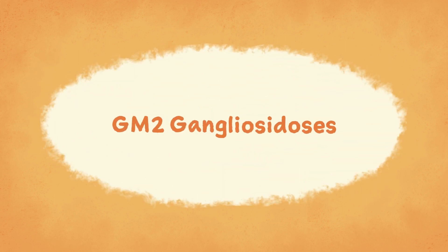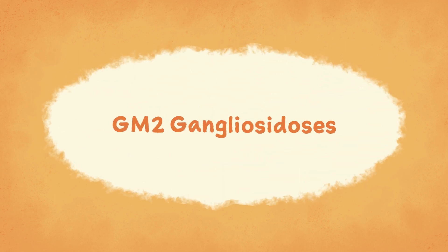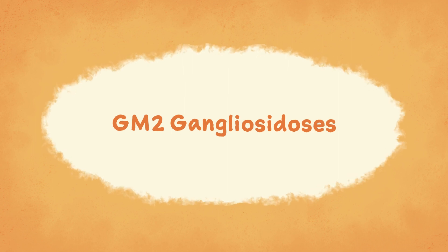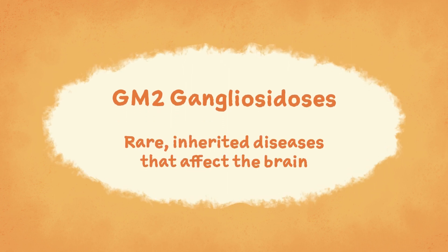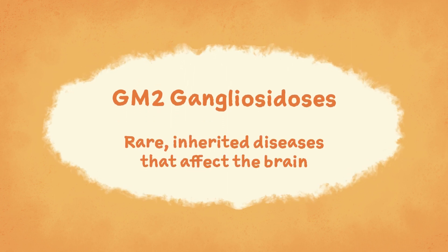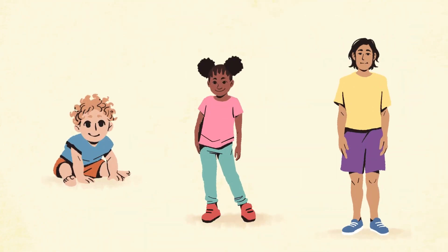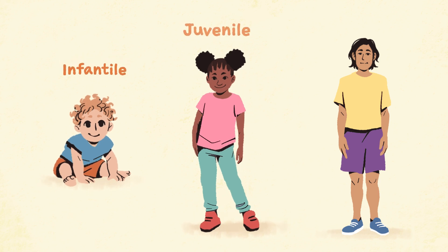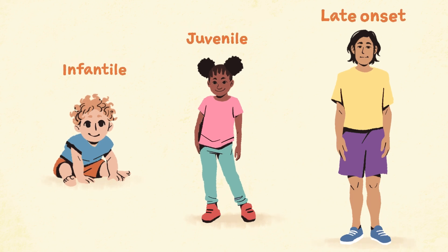Tay-Sachs and Sandhoff disease are part of a group of diseases called GM2 gangliocidoses. They are rare inherited diseases that affect the brain. There are three main variants of the diseases, which are classified by the age of onset: infantile, juvenile, and late onset.